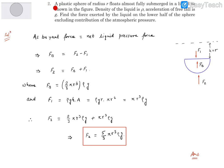Second problem: A plastic sphere of radius r floats almost fully submerged in a liquid as shown in this figure. Density of the liquid is rho, acceleration of free fall of gravity is g. Find the force exerted by the liquid on the lower half of the sphere, excluding contribution of the atmospheric pressure.